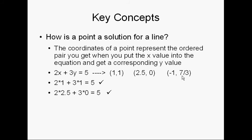Now, what about this one, though? Negative 1, 7 thirds. Don't let the fraction part scare you. Let's see what happens. I put in my negative 1 for my X. Put in my 7 thirds for my Y. 2 times negative 1, that's negative 2.